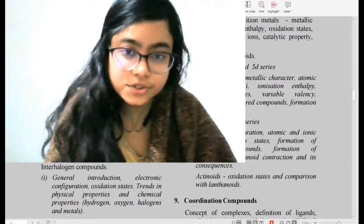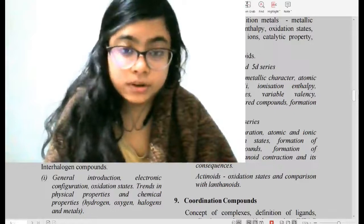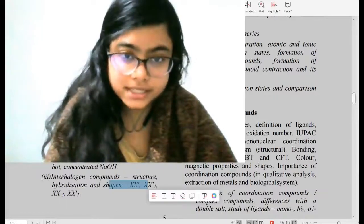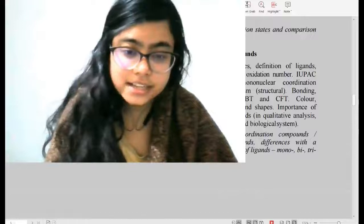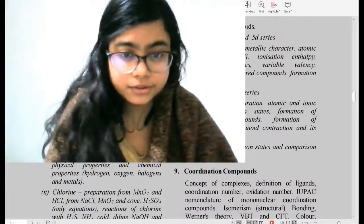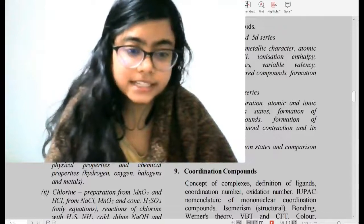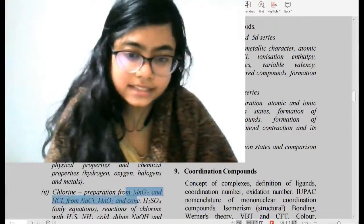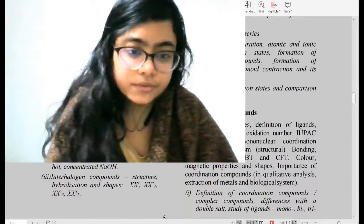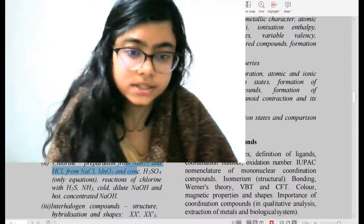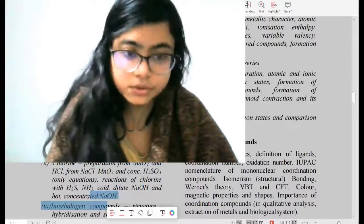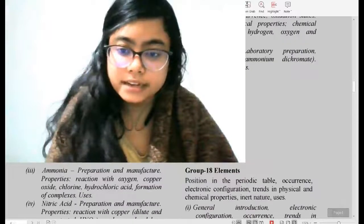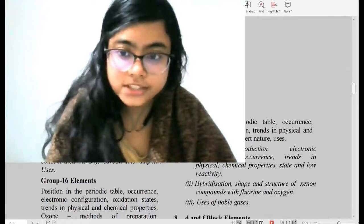It's better to study Groups 15 and 16, but definitely don't miss Groups 17 and 18. In Group 17, interhalogen compounds — their shape and hybridization — are very very important, building on class 11 concepts. For chlorine: preparation from manganese dioxide and HCl, and reactions of chlorine with dilute sodium hydroxide and concentrated sodium hydroxide — don't miss these.